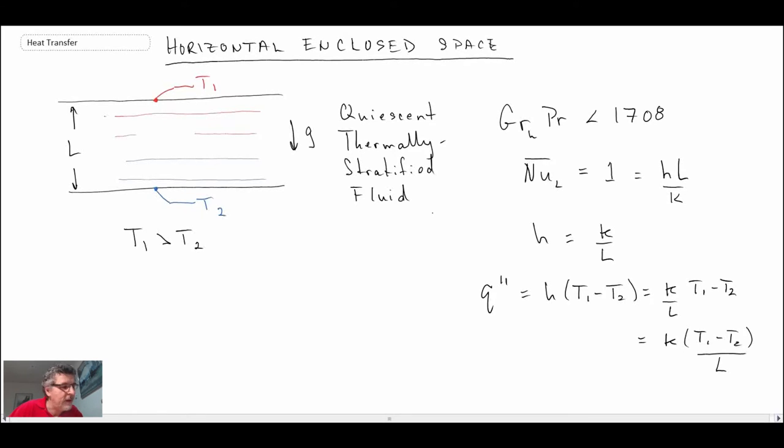That is why we have the Nusselt number equal to one for the thermally stratified fluid. Now the next one, when we go above that critical Grashof number 1708, the fluid starts to go into motion and that's where it gets kind of neat.